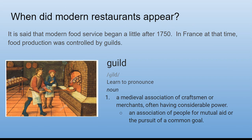When did modern restaurants appear? It's said that modern food service began a little after 1750 in France. At that time, food production was controlled by guilds. A guild is a medieval association of craftsmen or merchants — they often had a lot of power. It could also be an association of people who get together for mutual aid or to pursue a common goal, like all the bakers in town forming a guild.